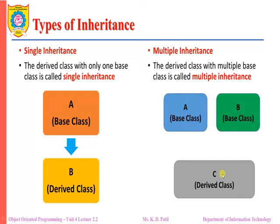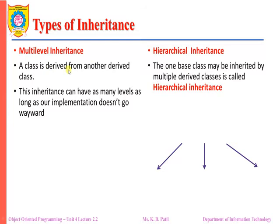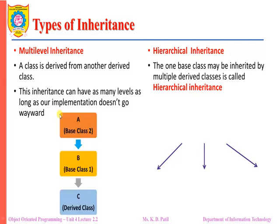Multiple inheritance: here the derived class has multiple base classes. For example, class A and class B are two base classes, and a single derived class can inherit the properties of both those multiple base classes. When a derived class inherits from more than one base class, it is referred to as multiple inheritance.